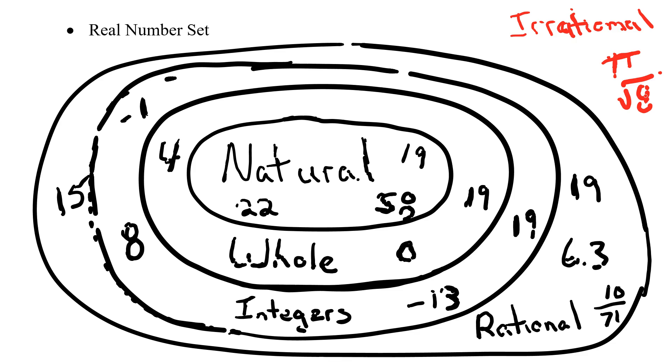So you can see that numbers belong to, or can belong to, multiple names. Number 19, we see it as a natural, as a whole, as an integer, and a rational. And, of course, a number like negative 13 would be an integer and a rational. And then numbers like 6.3 would only be rational. So this is a nice little guide to make you understand exactly how the numbers interact and what names we could use for them.